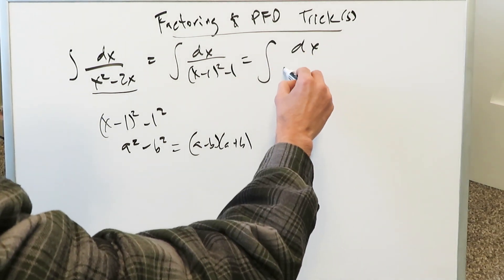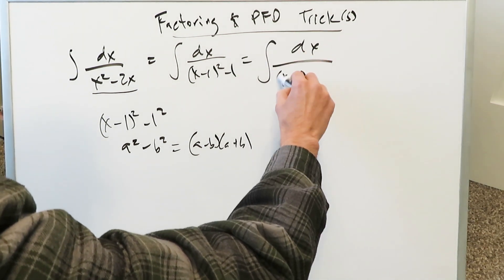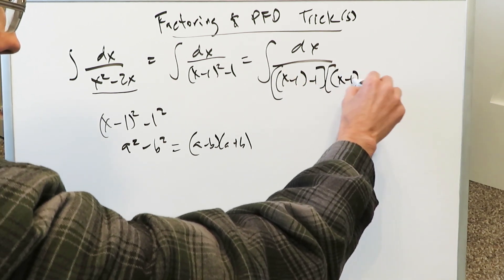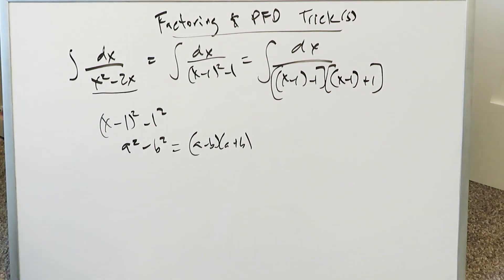You're looking at this. You're looking at x minus 1 minus 1. That's my a minus b. And then we're looking at x minus 1 plus 1, which is my a plus b. And everything is seemingly falling into place.